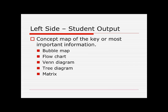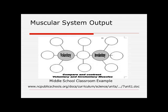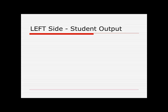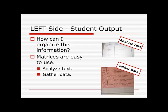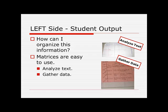Concept maps are also a really good idea for reflections. Bubble maps, flowcharts, tree diagrams — all of those things can be really good for summarizing what you've learned. Here's an example of a double bubble map that we used for the muscular system in seventh grade. This is an example of a matrix that we used for summarizing lab data.